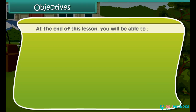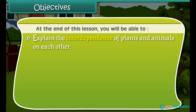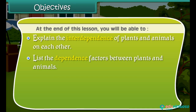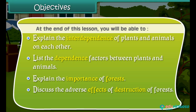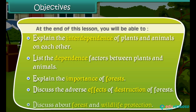At the end of this lesson, you will be able to: explain the interdependence of plants and animals on each other; list the dependence factors between plants and animals; explain the importance of forests; discuss the adverse effects of destruction of forests; and discuss forest and wildlife protection.